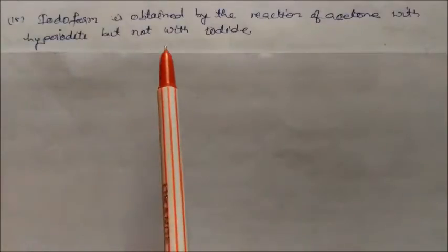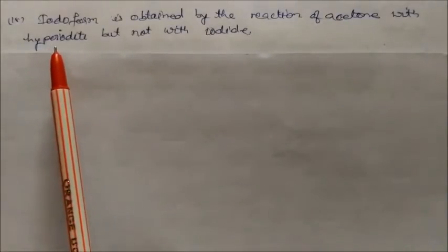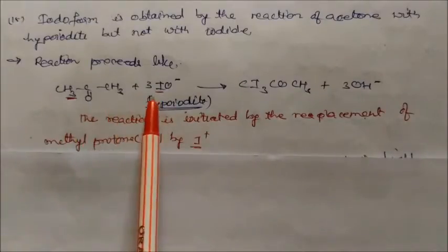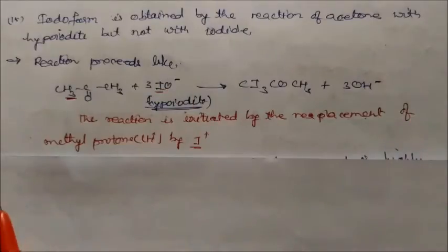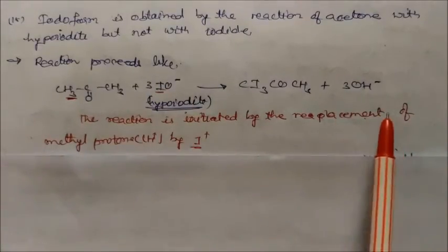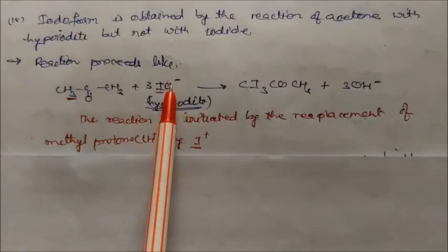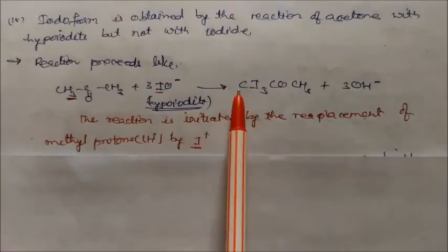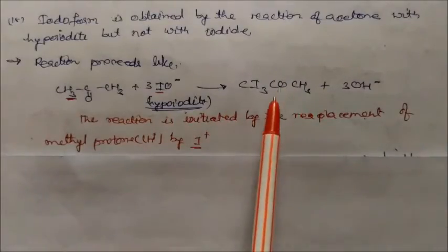Iodoform is obtained by the reaction of acetone with hypoiodite (OI⁻), but not with iodide. This reaction is initiated by the replacement of the methyl protons — all three hydrogens of the methyl group are replaced by iodine to give CI₃CO·CH₃ (triiodoacetyl compound). Because the CI₃ group is a very good leaving group, when attacked again by a strong base, it is cleaved to give iodoform (CHI₃). This is the iodoform reaction.